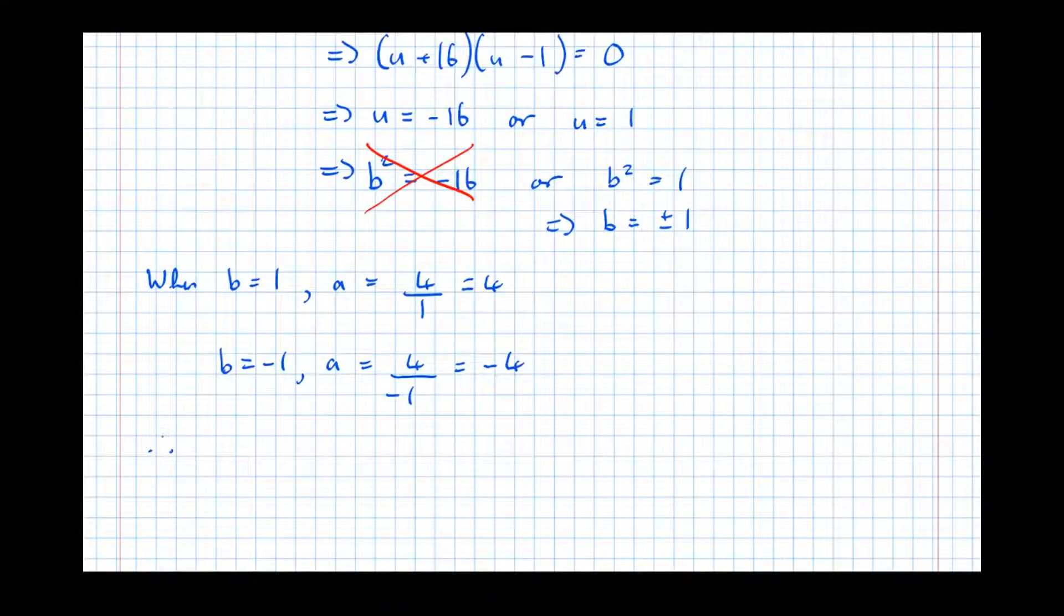Therefore, square roots of 15 plus 8i are: when b is 1, a is 4, so it's 4 plus i or minus 4 minus i.